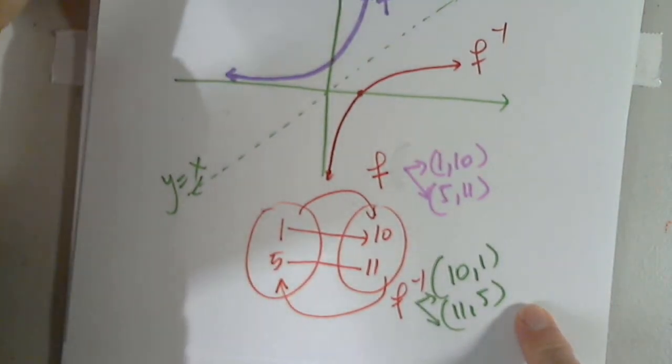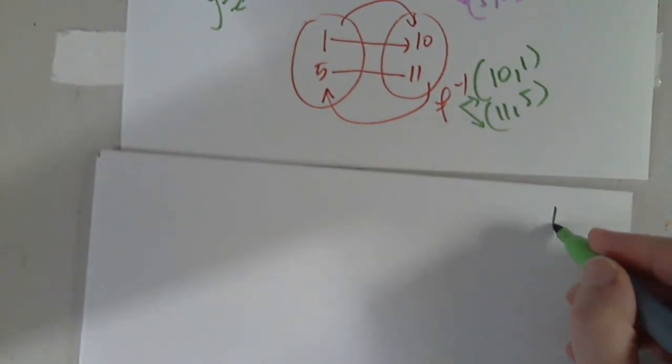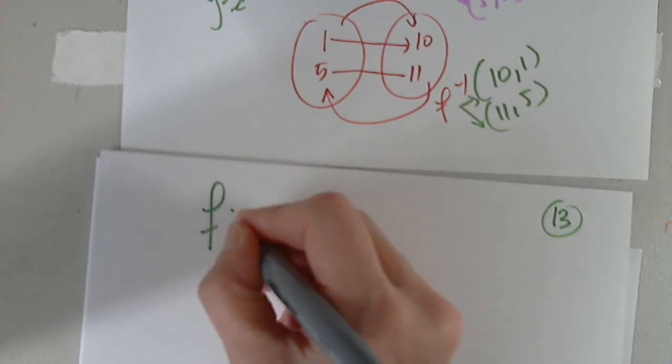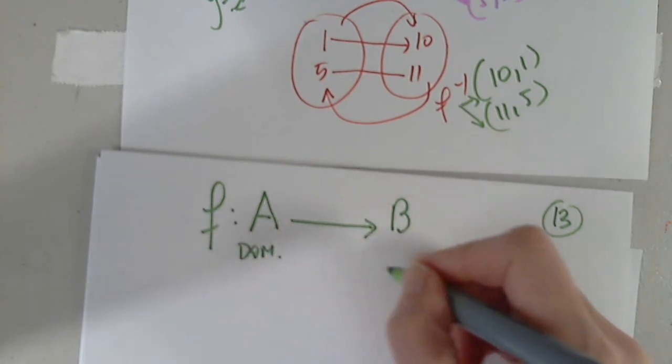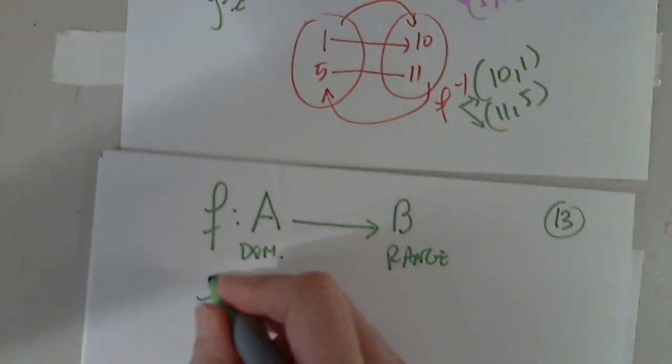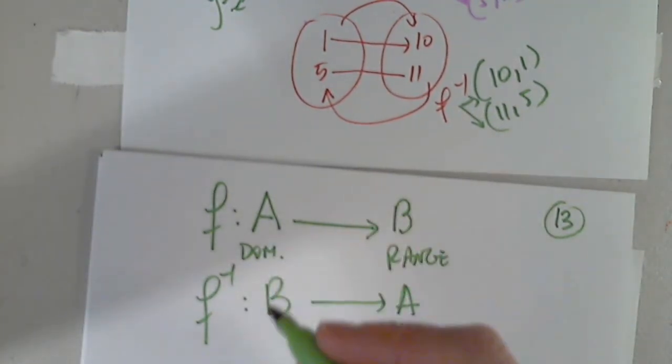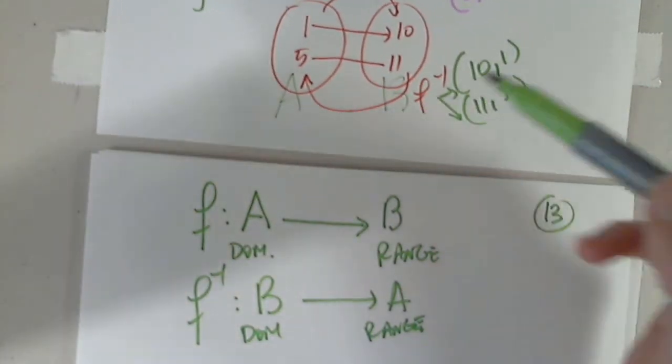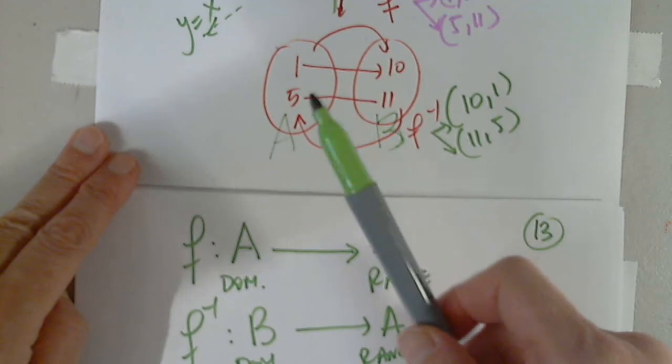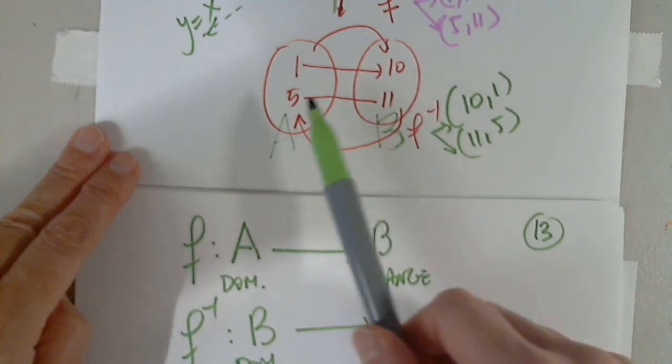If the domain of function f and the range of function f, for example, this is how we normally write it. f is defined on a, taking values on b. So, this is the domain, and this is the range. Obviously, f inverse would be defined on b, and taking values on a. This will be the domain, and this will be the range. If this is a, this is b. A function f has domain a and range b. Function f inverse has domain b and range a.